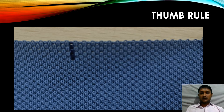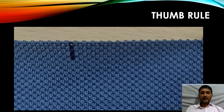As usual, before we start our structure analysis, we need to follow our thumb rule by marking the vertical line after removing all the loosened thread.